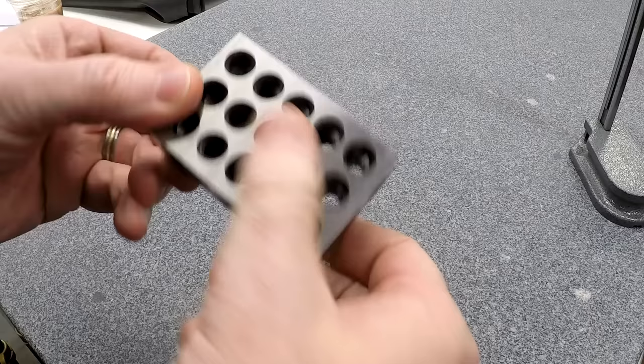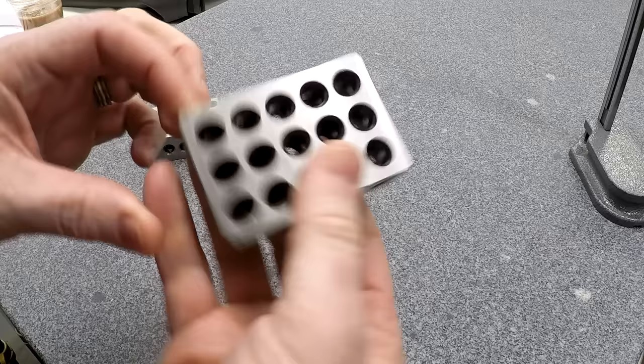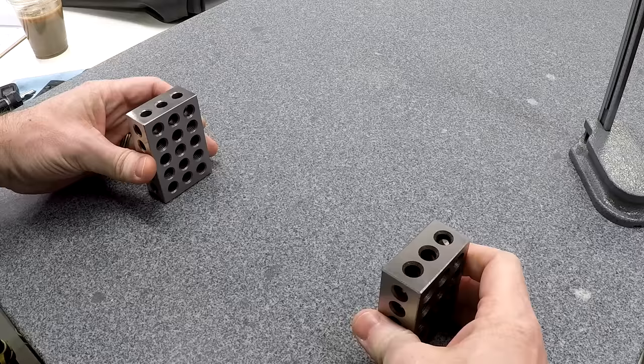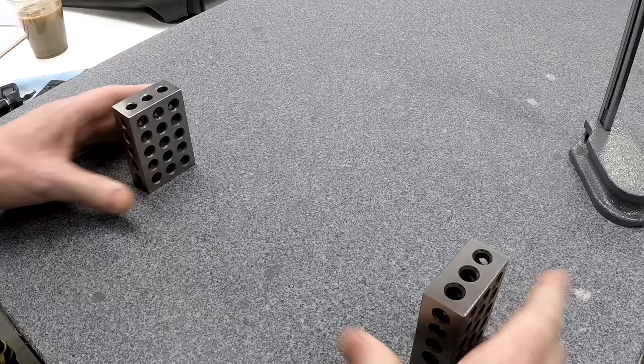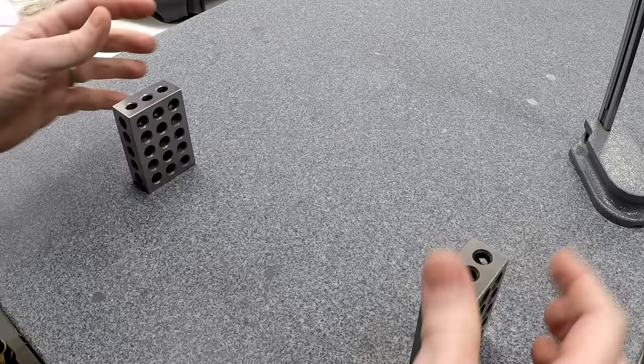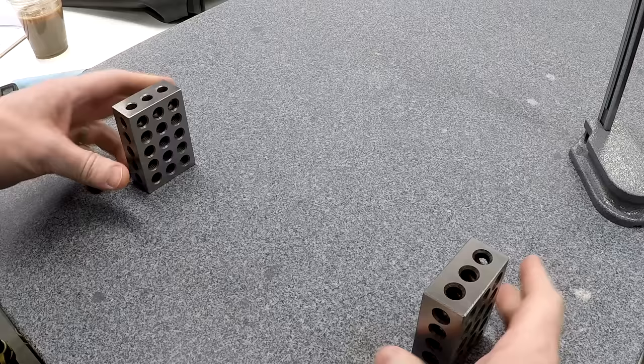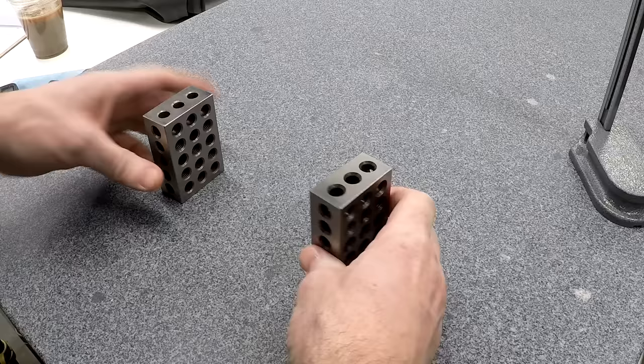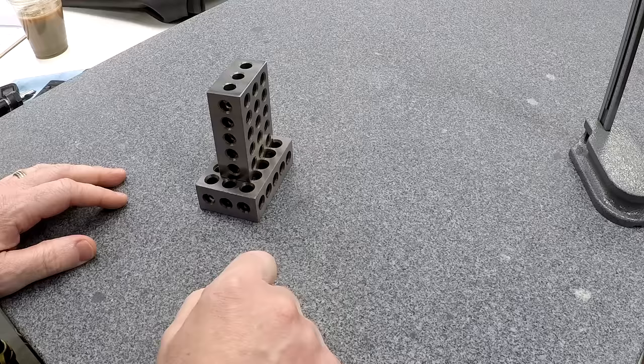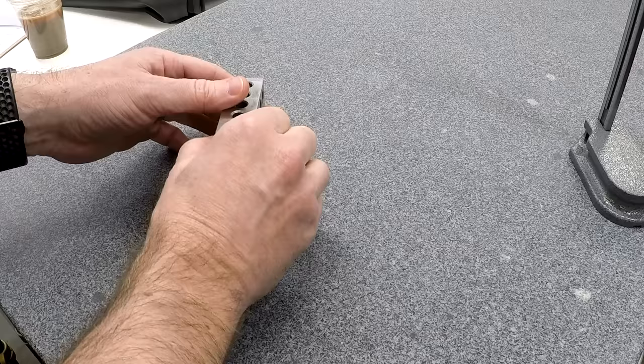Number six on my list is 123 blocks. These are really versatile. If you've never worked with 123 blocks, it's just a block of hardened and ground steel that is one inch by two inches by three inches. And you can use these for fixturing. Like you could set them up on the table of your mill, like on the sides of the vise. You've seen me do this, then lay a long work piece across them and then clamp it in the vise jaws to provide lateral support and then vertical support on top of the blocks. You can also set these up, put parts over them and hold them down with toe clamps on the mill. You can stack these in whatever configuration you need to get the heights.